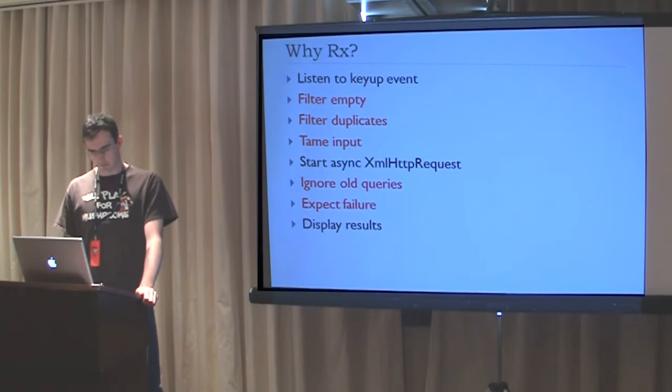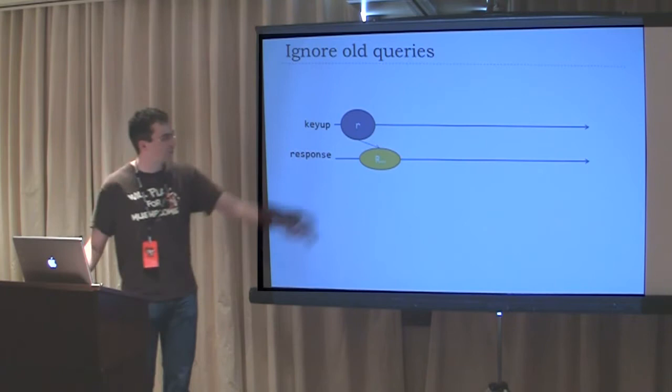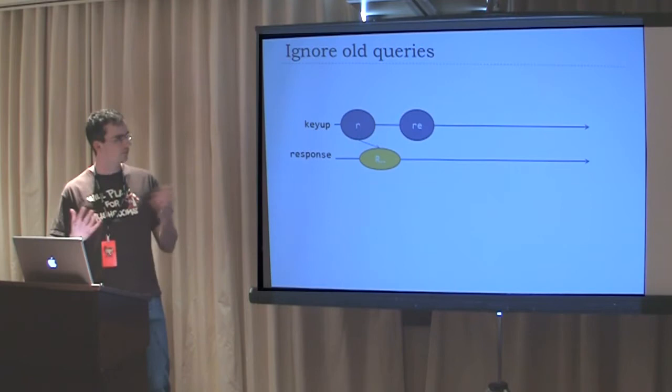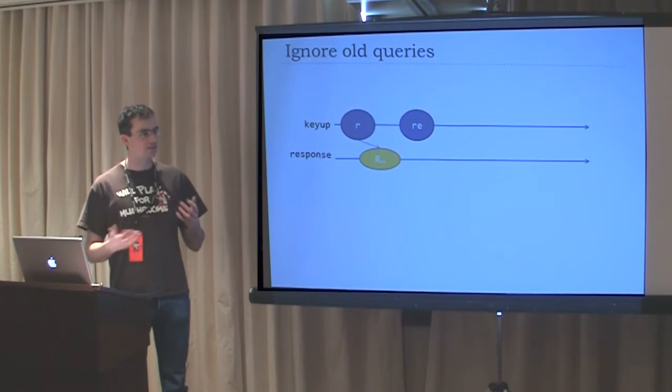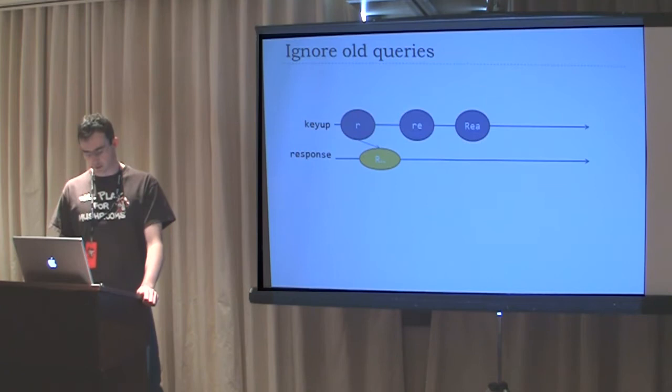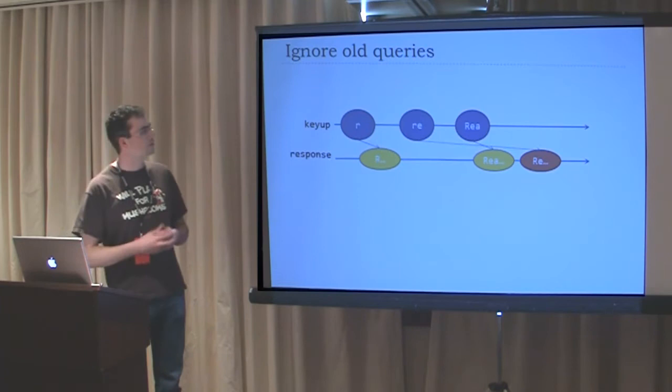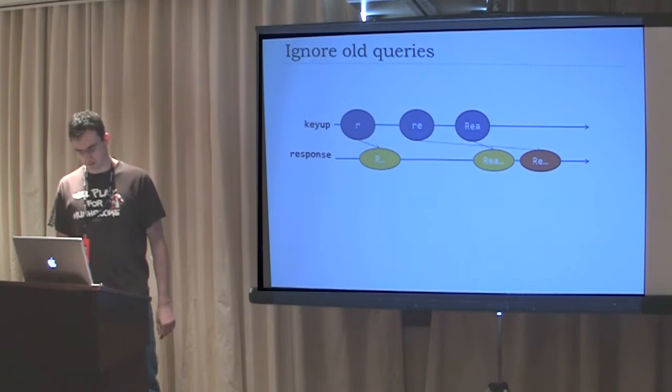Let's look at that ignore old queries thing. Imagine the user types R, the server sends completions for R. The user types E, but hits an overloaded server that takes time to respond. Meanwhile, the user types the next character and hits a fast server that immediately returns completions for REA. Then the busy server wakes up and sends completions for RE. Now the user's UI is updated with an old completion - that's pretty bad.